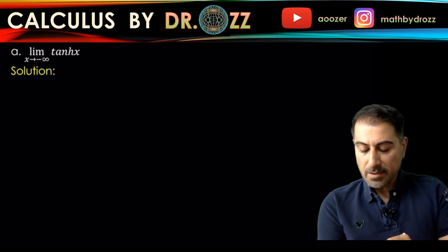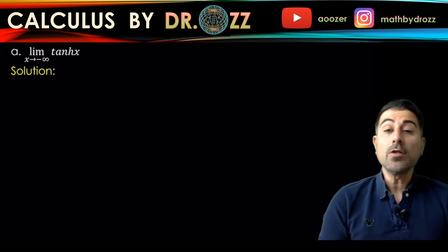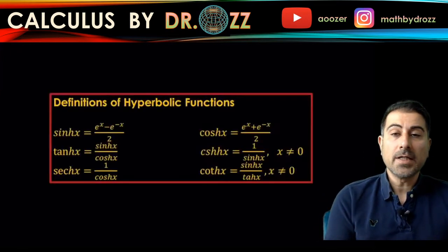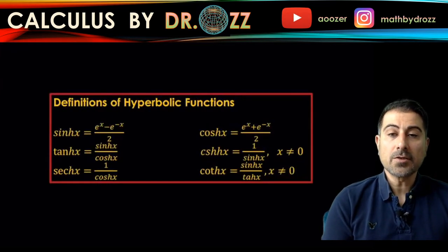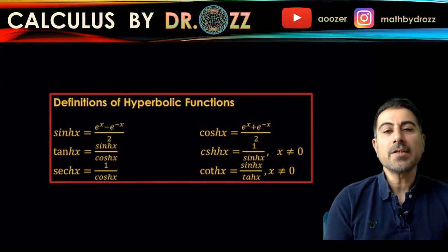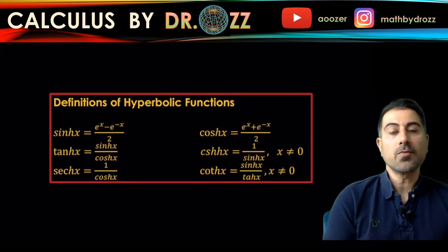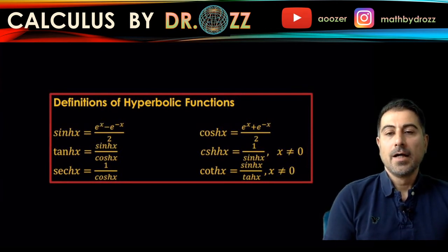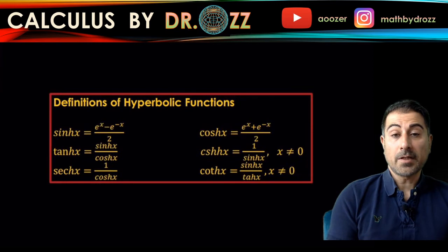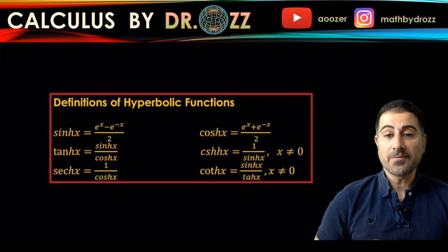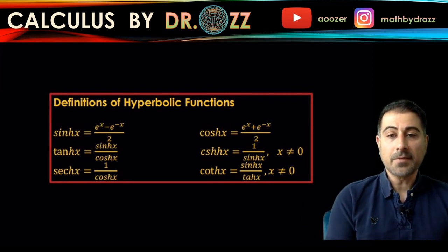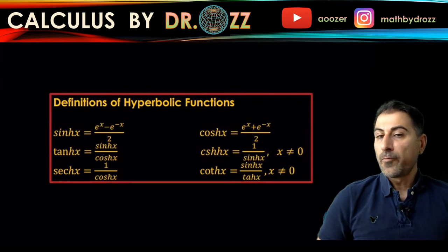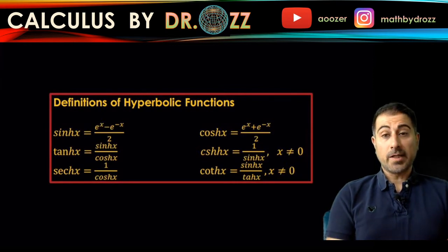So for that reason, we should recall the definition of hyperbolic functions in terms of exponentials, because in limit calculations, as you remember from Calc 1, exponential functions are nicer to deal with than hyperbolic functions. And plus, this is the first time you're exposed to hyperbolic functions. So why not use exponentials to deal with those limits.